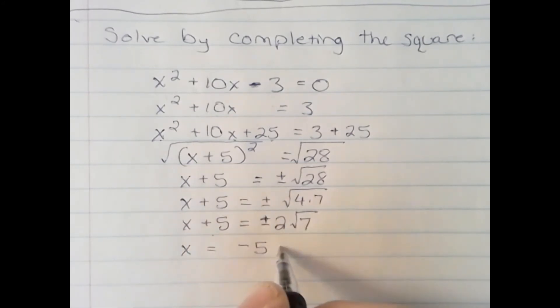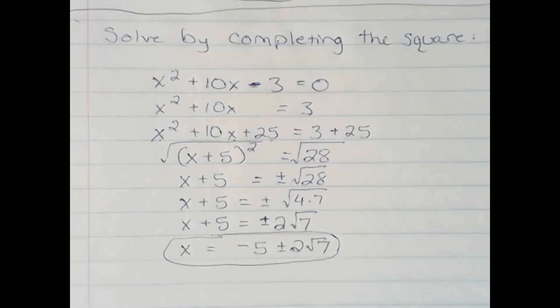Final answer, negative 5 plus or minus 2 radical 7. And that will solve our equation by completing the square.